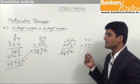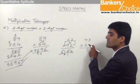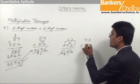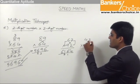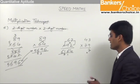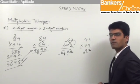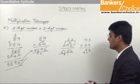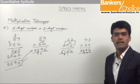Following the same technique, let us find the answer for 43 into 79. 3 into 9 is 27, so 7 is in the answer and 2 gets carried forward. Then cross multiplication: 4 into 9 is 36, and 7 into 3 is 21. 36 plus 21 is 57. 57 plus 2 (carry) is 59. So 9 in the answer and 5 gets carried forward. The last step is multiplication of 10 spaces: 4 into 7 is 28. 28 plus 5 is 33. So the answer for this question is 3397.